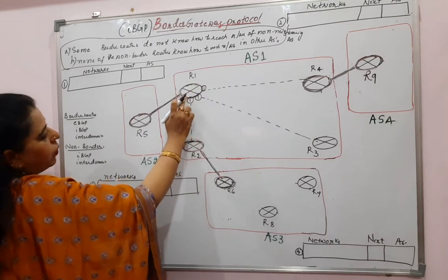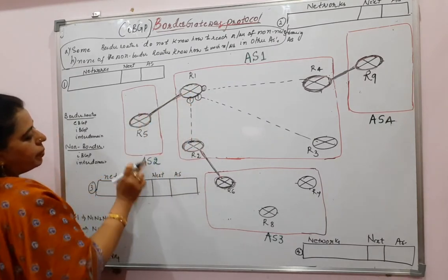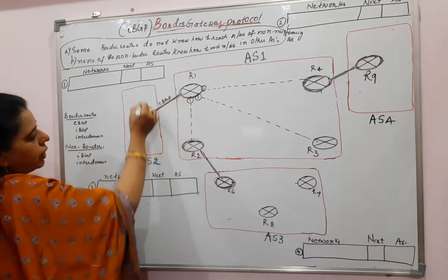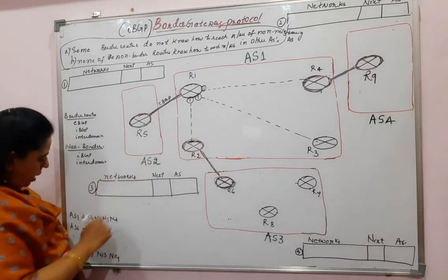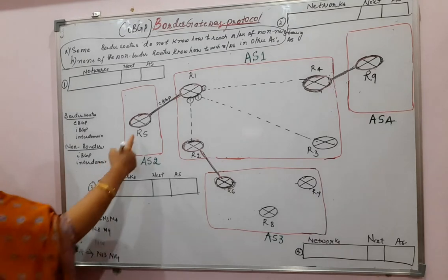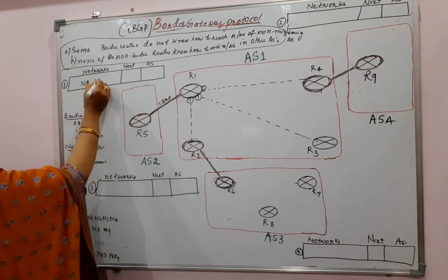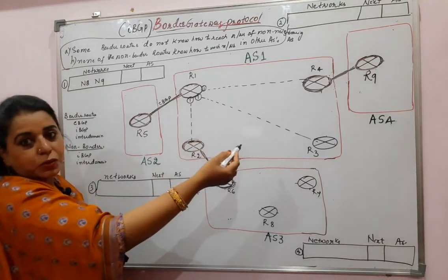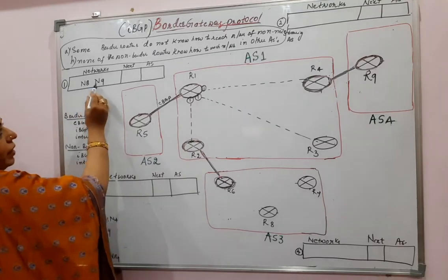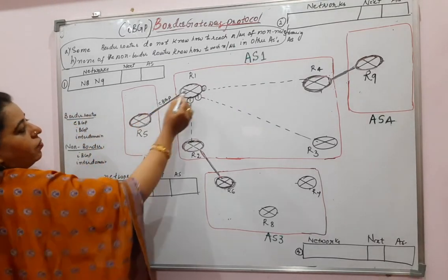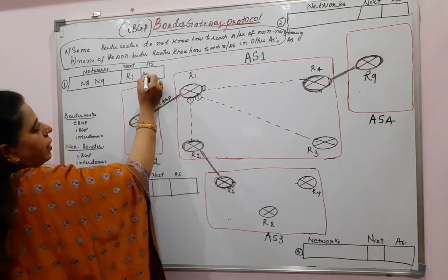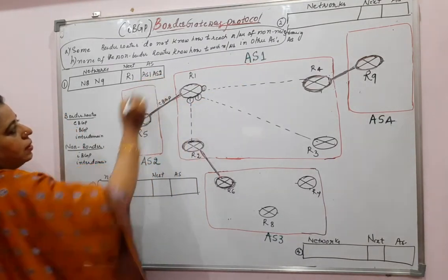Since R1 has an EBGP session established with AS2, it knows what networks are present in AS2. AS2 has N8 and N9. So message 1 conveys to all internal routers that you can reach N8 and N9 via R1. The autonomous systems involved are AS1 and AS2.